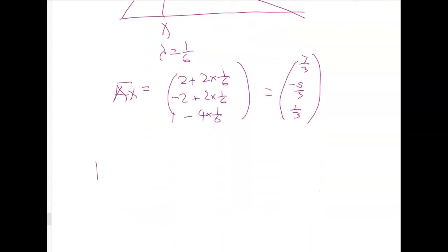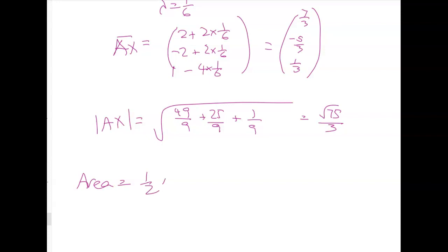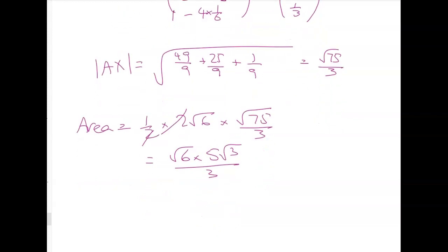Finally, we can figure out the length of AX. And it's going to be equal to 49 over 9 plus 25 over 9 plus 1 ninth, which gives me root 75 on 3. So the area is half times the base, which was 2 root 6 times root 75 over 3. And you get lots of nice cancelling out. Root 6 times 5 root 3 over 3, which gives us the square root of 18 times 5 over root 3, which is 3 root 2 times 5 over 3, which is the same answer we got before, 5 root 2.